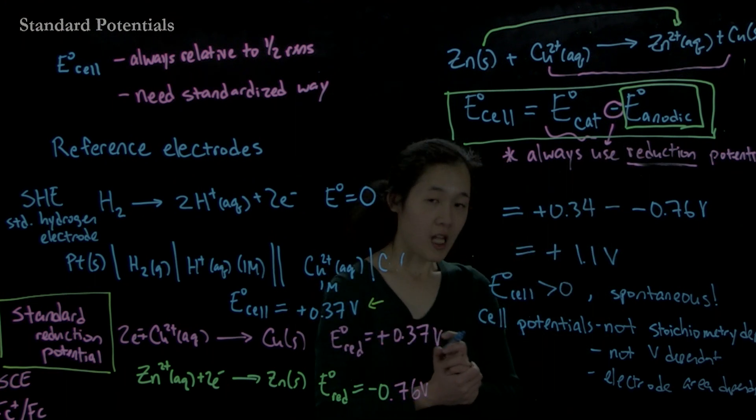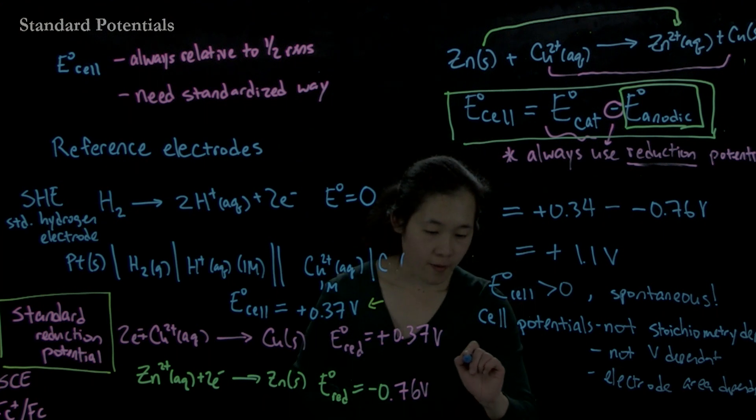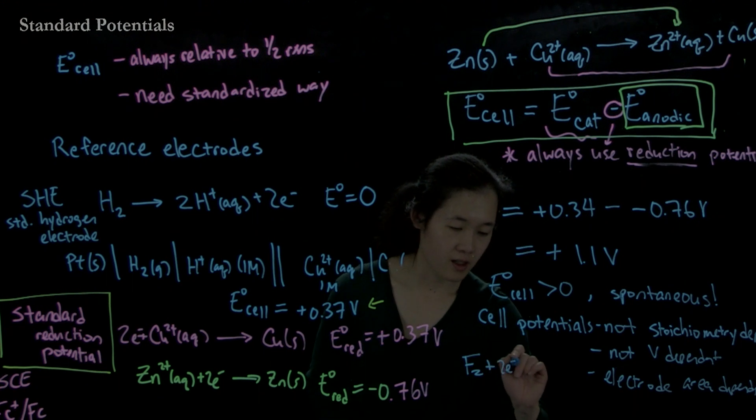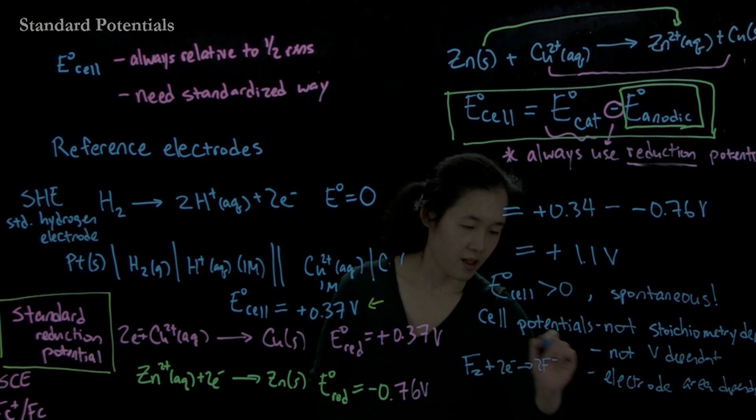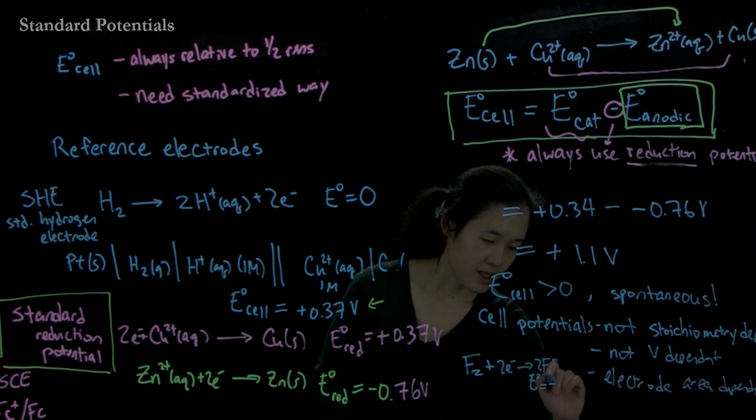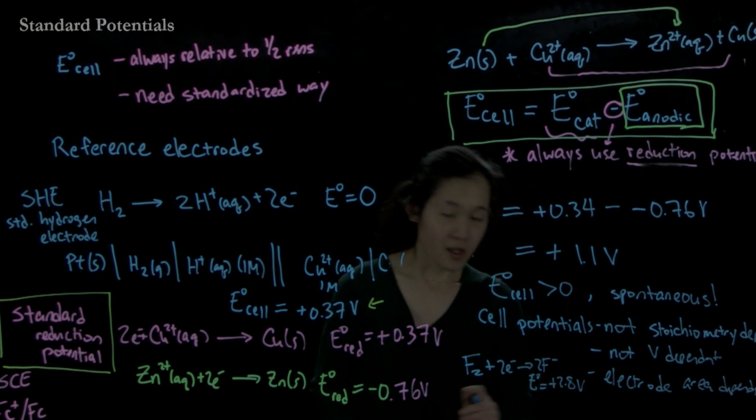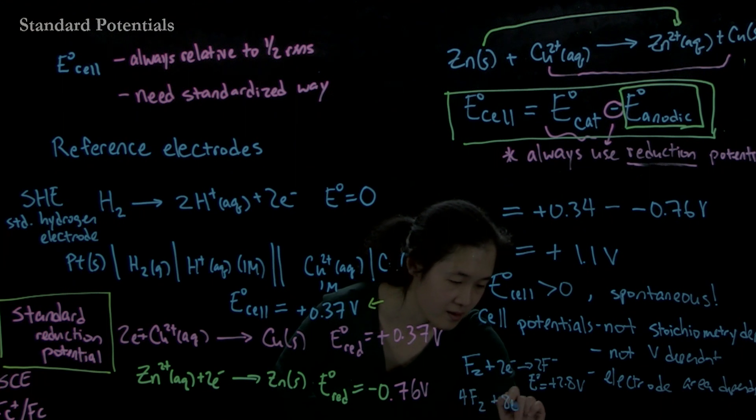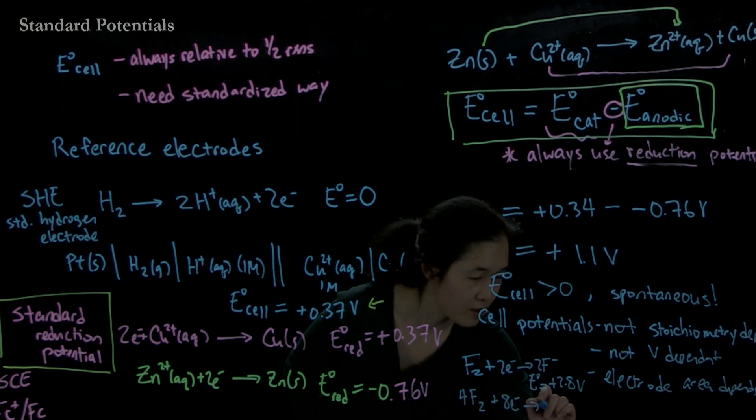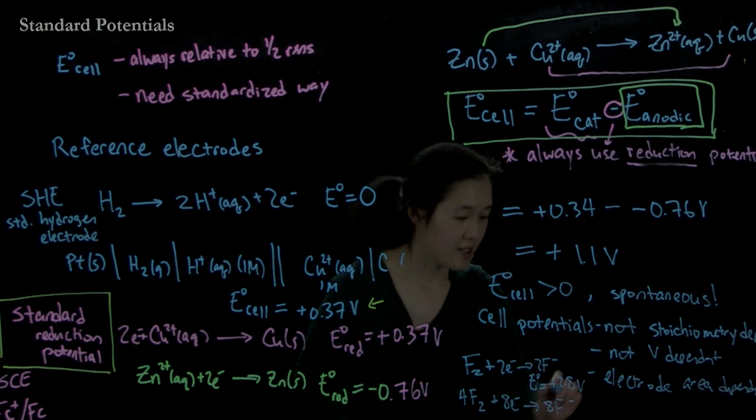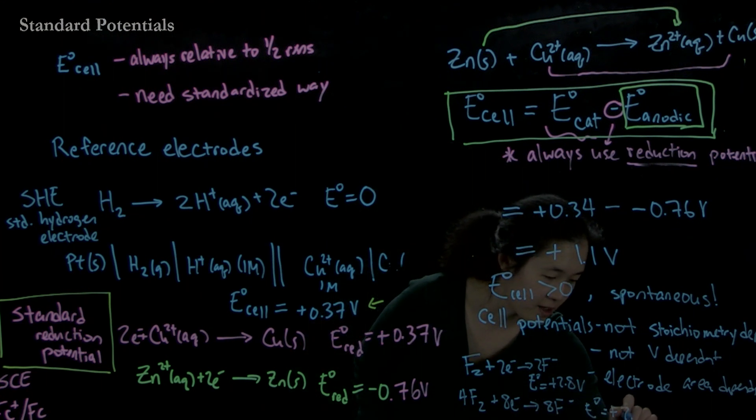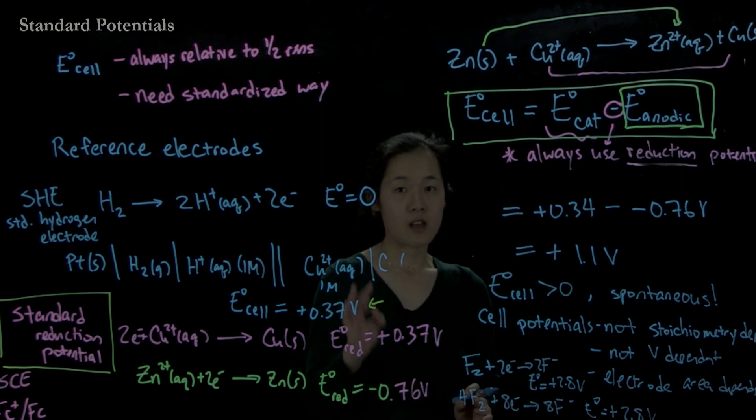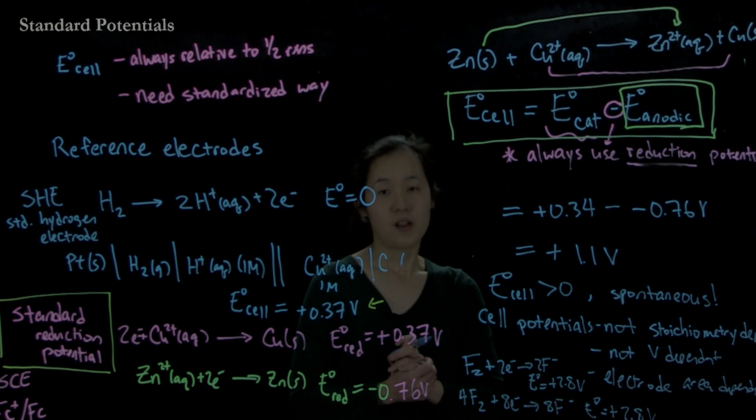For example, if you want to think about fluorine getting reduced going to two fluorides, remember this E0 was plus 2.8 volts. If we had four fluorines getting reduced by eight electrons, going to eight fluorides, this E0 is also plus 2.8 volts. So it's not dependent. What will be stoichiometry dependent and everything else dependent is delta G. And we'll talk about that in the next video.